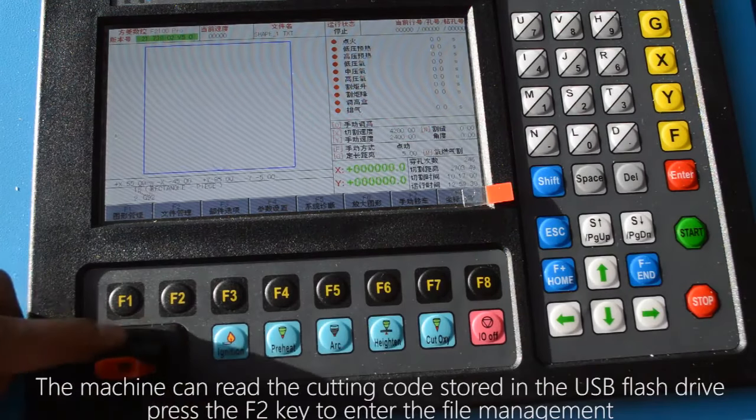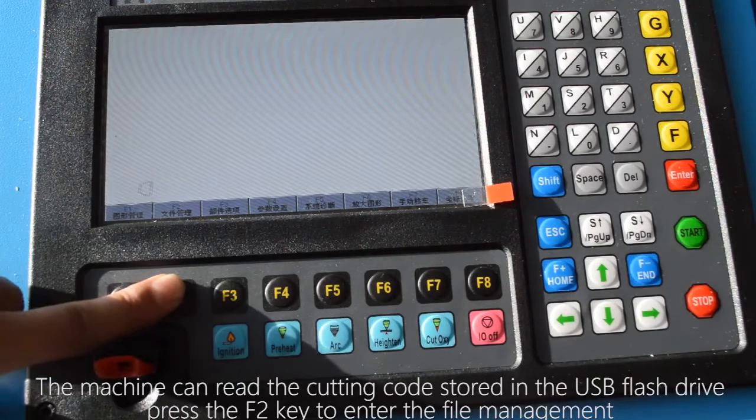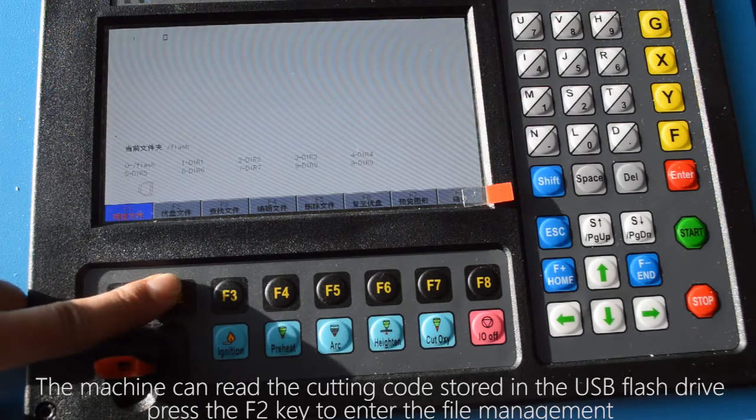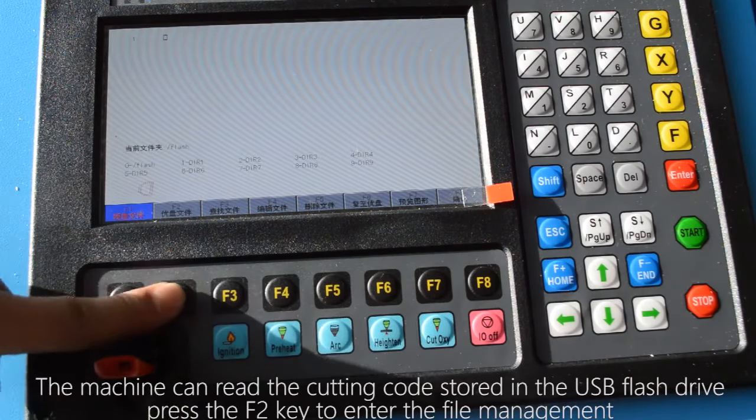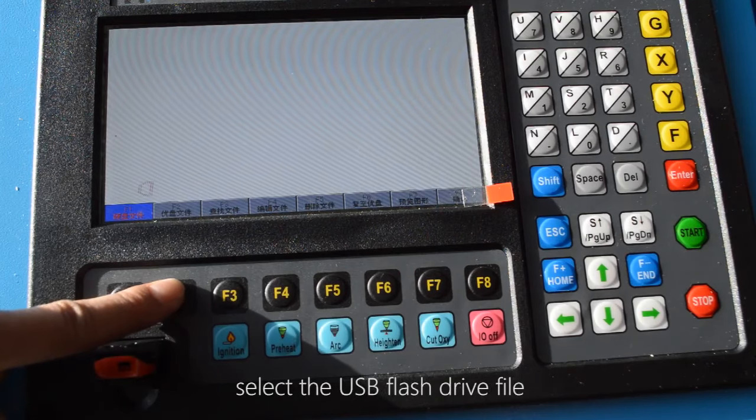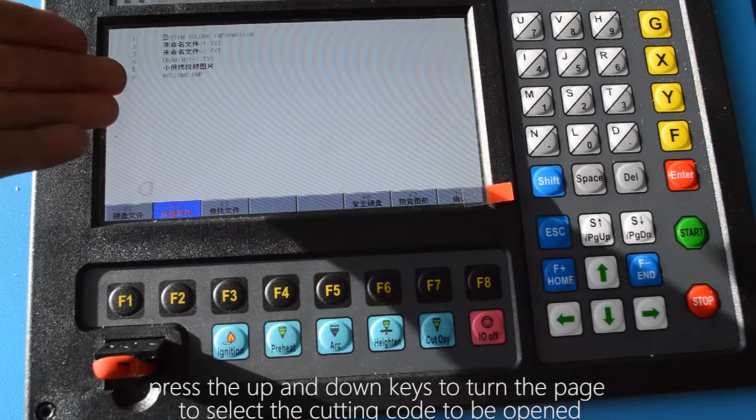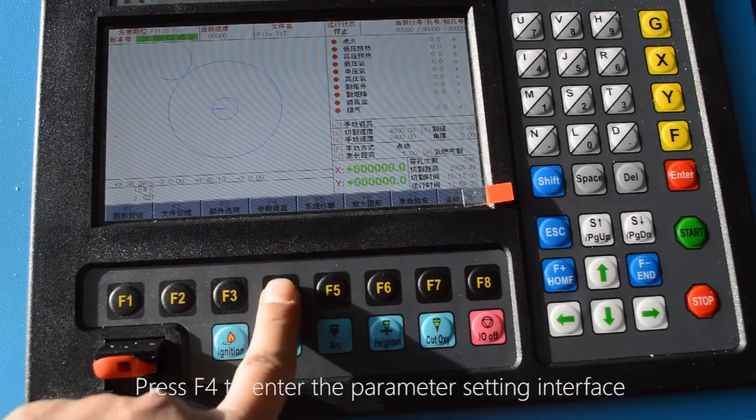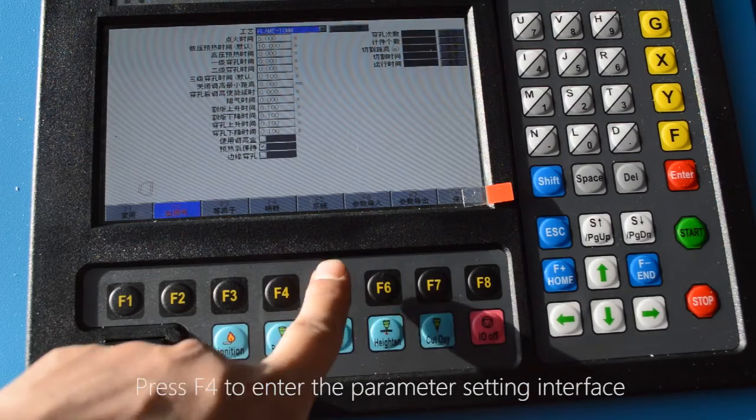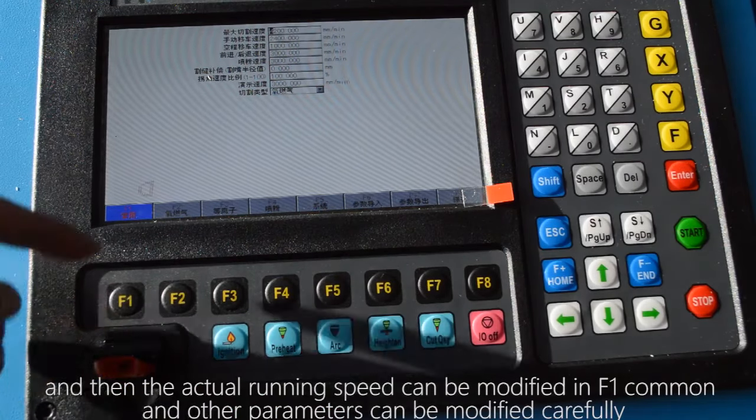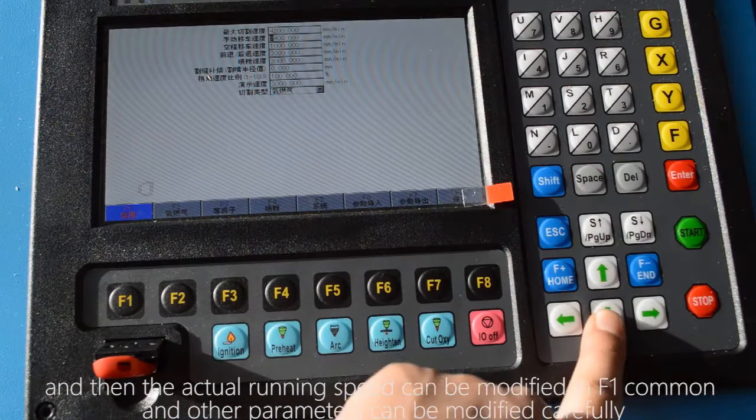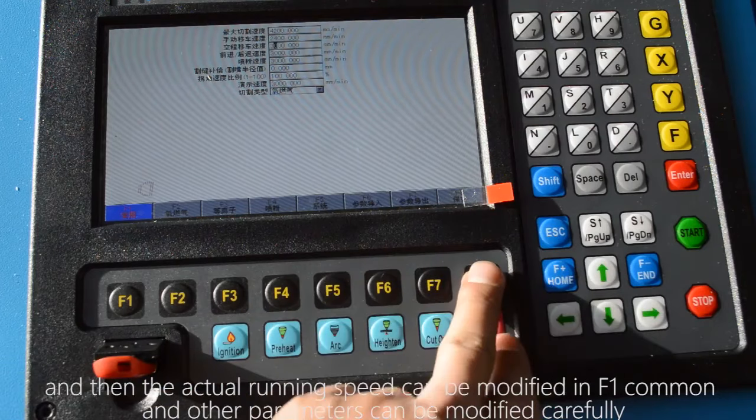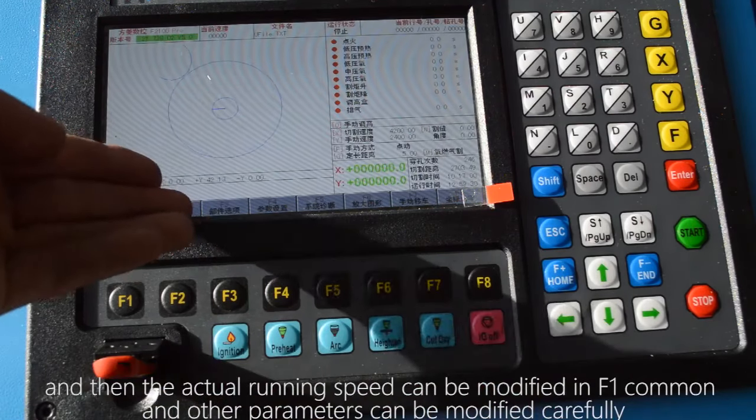The machine can read the cutting code stored in the USB flash drive. Press the F2 key to enter the file management, select the USB flash drive file, press the up and down keys to turn the page to select the cutting code to be opened. Press F4 to enter the parameter setting interface and then the actual running speed can be modified in F1 common and other parameters can be modified carefully.